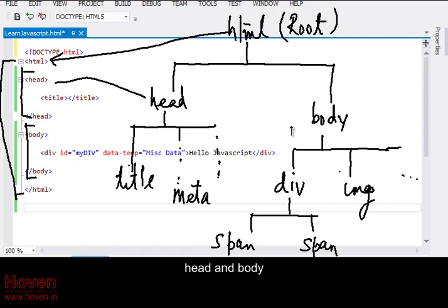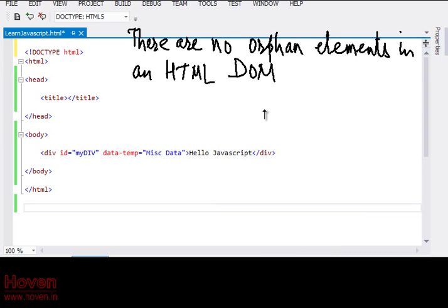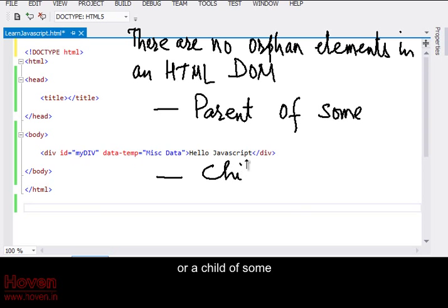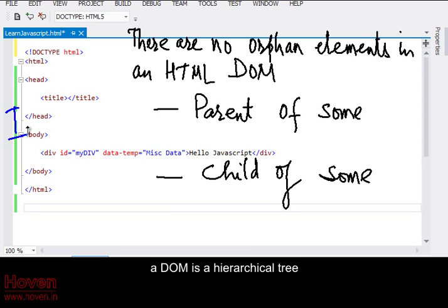HTML root element. Head and body. All elements in a DOM hierarchy are interlinked. Wandering orphans are not possible. A tag would be either a parent of some or a child of some. A DOM is a hierarchical tree.